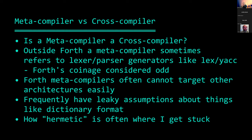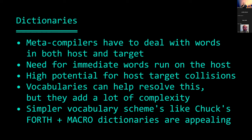I think there is something to 'meta-compiler' as a distinct term, because Forth meta-compilers aren't quite cross-compilers either. They often can't target other architectures easily — they have subtle dependencies on the existing system and frequently have leaky assumptions about things like dictionary format. They may assume that the target has a similar dictionary format to the host. This distinction of how hermetic or how dependent the target is on properties of the host is actually one of the key issues where I get stuck.